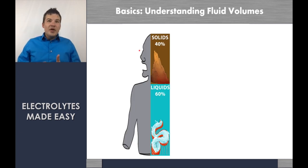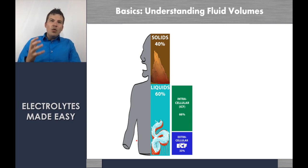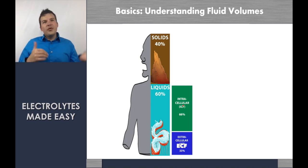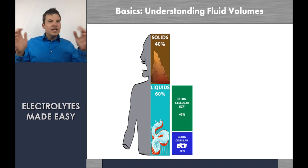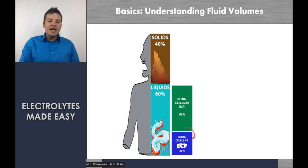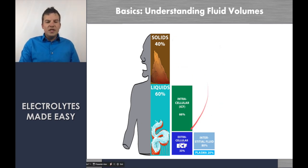Let's jump into fluid volumes. Everything we're talking about is in the fluid part of the body. The body is made up of 60% water, so we can take any person's weight and multiply by 60% to get the total fluid volume. Breaking that down: two-thirds, or 66%, is intracellular volume — inside the cells — and one-third, or 33%, is extracellular. Lab values measure what's outside the cells, in the extracellular fluid volume.